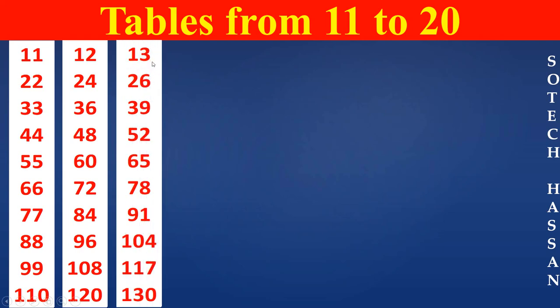Thirteenth table. 13 ones are 13. 13 twos are 26. 13 threes are 39. 13 fours are 52. 13 fives are 65.